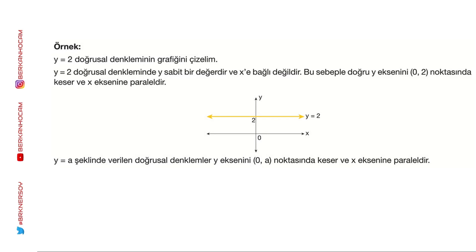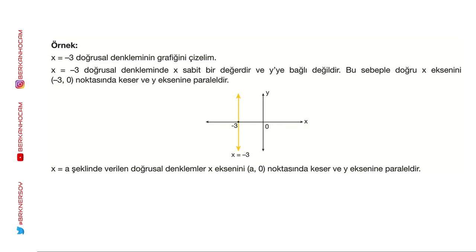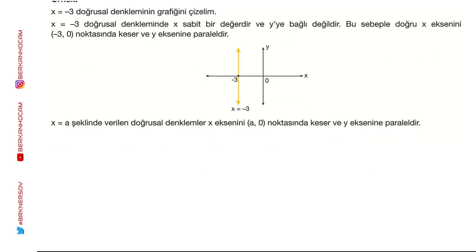y=2 doğrusunun grafiği: eksenlere paraleldir. x=A veya y=B tarzındaki ifadeler eksenlere paralel olan doğrulardır. y=2 noktasını işaretliyorsun; x ile herhangi bir ifade yok, x'e ne koyarsan koy. Bu yüzden x eksenine paralel olarak bu doğruyu çizeceğiz. x=-3 için: x=-3 noktasını bulduktan sonra y herhangi bir değer alabilir; y eksenine paraleldir.